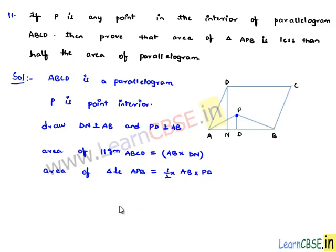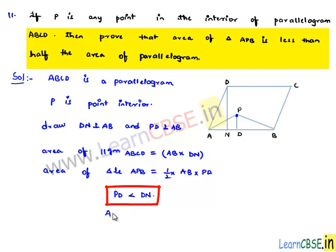Now, we know that PD is less than DN. Let us multiply on both sides by AB, then we get AB into PD will be less than AB into DN.